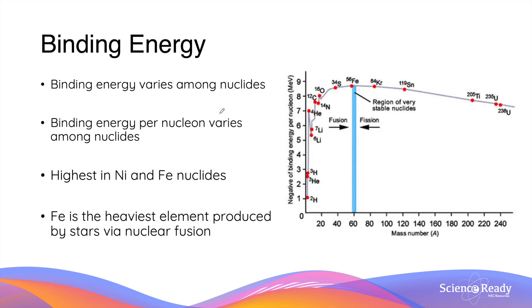The binding energy of nuclides depends on their composition. This is why binding energy varies among nuclides. The binding energy per nucleon, that is the binding energy divided by the total number of nucleons in the nucleus, also varies among nuclides.